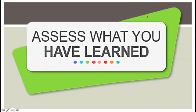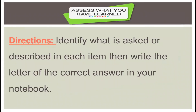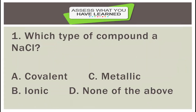Let us assess what you have learned about ionic and covalent compounds. Please answer the next 10 questions. Directions: identify what is asked or described in each item, then write the letter of the correct answer in your notebook or answer sheet. Number one: which type of compound is sodium chloride or NaCl? A: covalent; B: ionic; C: metallic; D: none of the above.